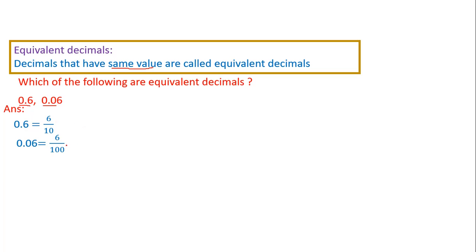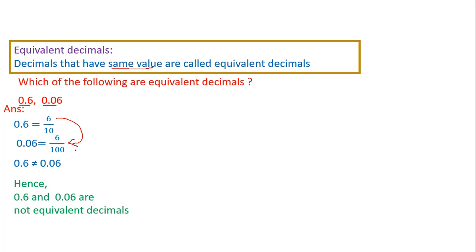As you can see, 6 by 10 and 6 by 100 do not have the same value, meaning both the fractions are not equivalent fractions. Because of that we will say that 0.6 is not equal to 0.06 — hence these two decimals are not equivalent decimals.